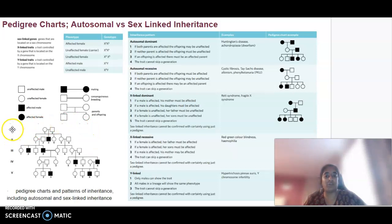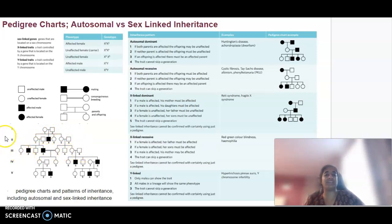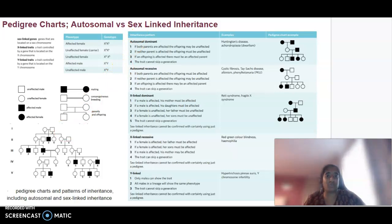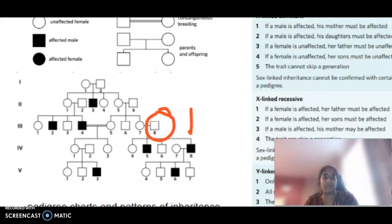We use Roman numerals to designate the generation — so 1, 2, 3, 4 and 5 — and then we number each specific individual within that generation, starting from 1. For example, a particular individual might be part of generation 3 and be individual number 8. That is how we would identify that particular individual.